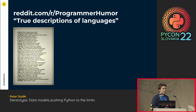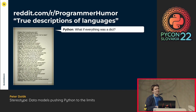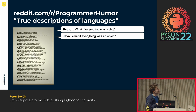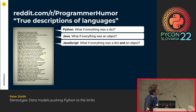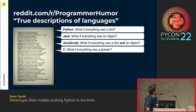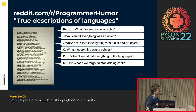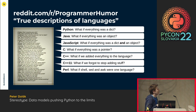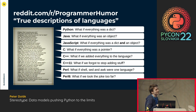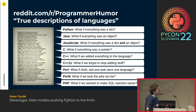So what does it say about our beloved Python? What if everything was a dict? Well, that's not nice to say. Java: what if everything was an object? JavaScript: what if everything was a dict and an object? C: what if everything was a pointer? C++: what if we added everything to the language? C++11: what if we forgot to stop adding stuff? Perl: what if shell, sed, and awk were one language? Perl6: what if we took the joke too far? PHP: what if we wanted to make XSS injection easier?